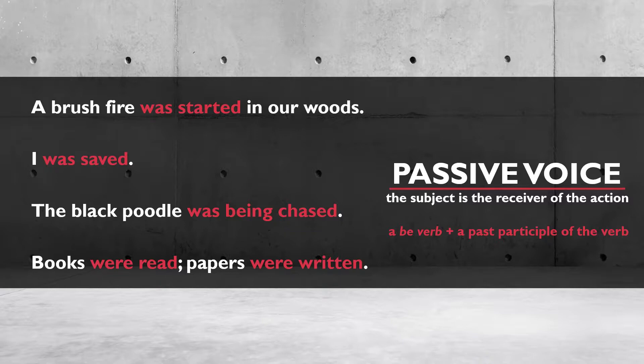Who is performing the action of the verbs? Someone not mentioned in the sentence — most importantly, not the subject. Each of these sentences is an example of passive voice because the subject is the receiver of the action. You can also easily identify passive voice by looking for a be-verb plus a past participle of a verb: was started, was saved, was being chased, were read, were written. The important thing is that the subject of the sentence is receiving the action of the verb.